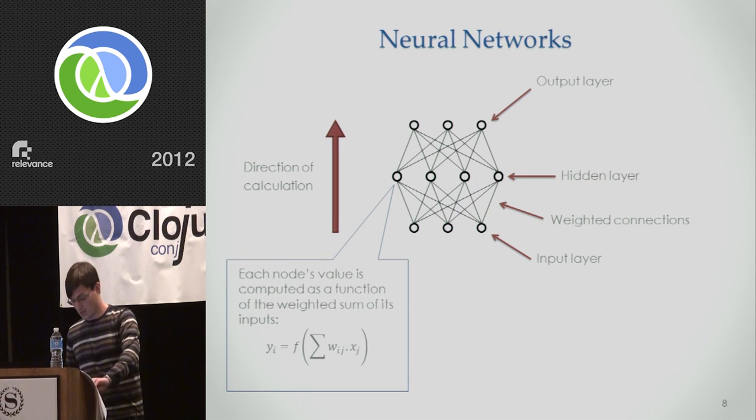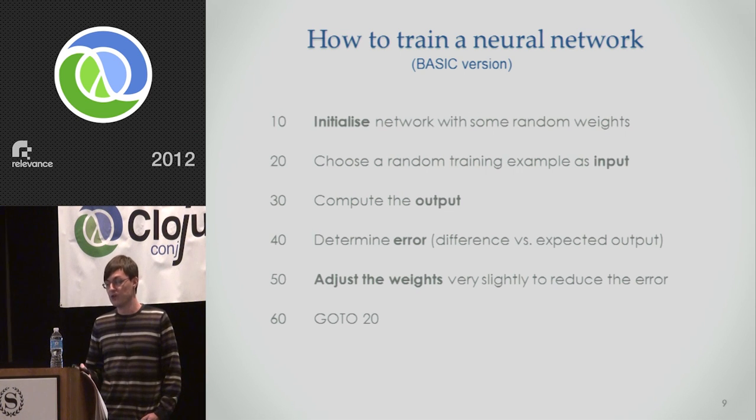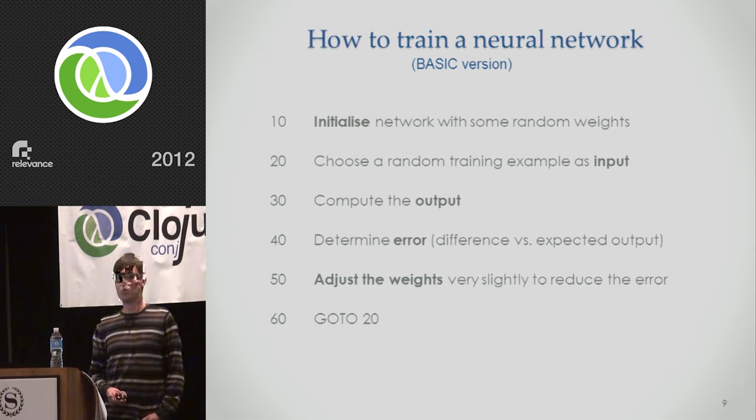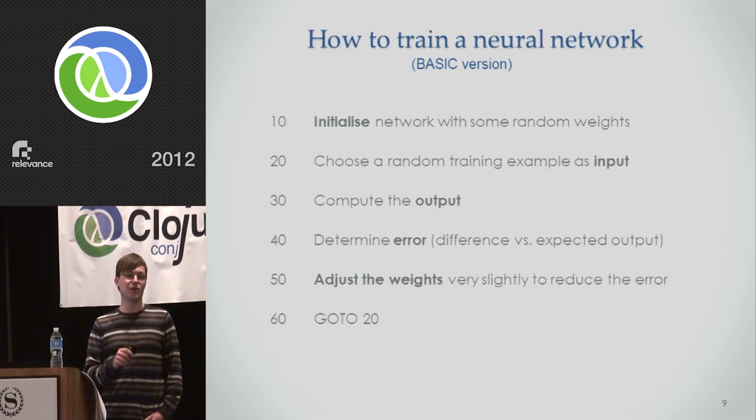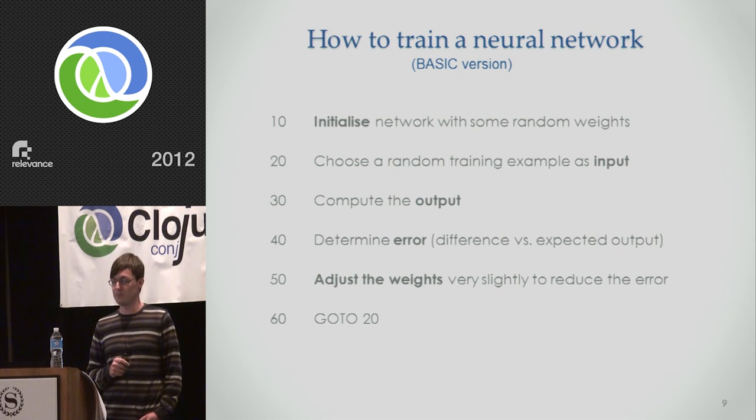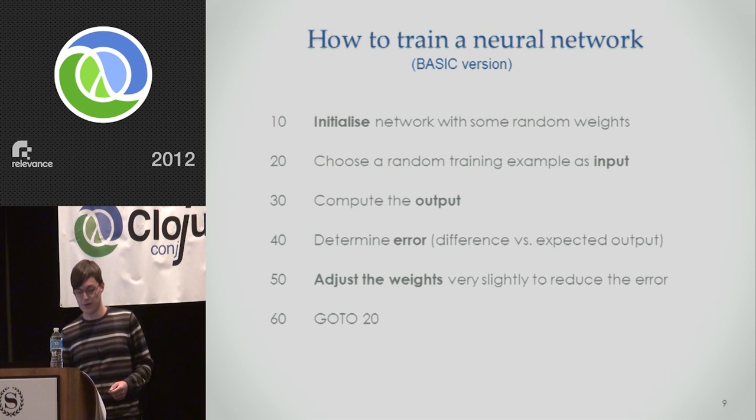And neural networks are often a good choice for machine learning. Two reasons. One, we actually know some pretty good algorithms for training them. And the algorithms are getting better all the time. And secondly, there's a useful fact that if you make a neural network large enough, it's actually capable of approximating any kind of function. So they work as a universal function approximator, which is a useful property to have. So how do we train these things? You start off initializing them with some random weights. You then choose a random training example as input from your training data. You run that through the network. You compute the output of the network, see what it produces. You then determine the error. So you compare what the network produced with what you would have liked it to have produced. What was the expected output you'd want to see? And then you adjust the weights very slightly in whatever direction reduces the error.